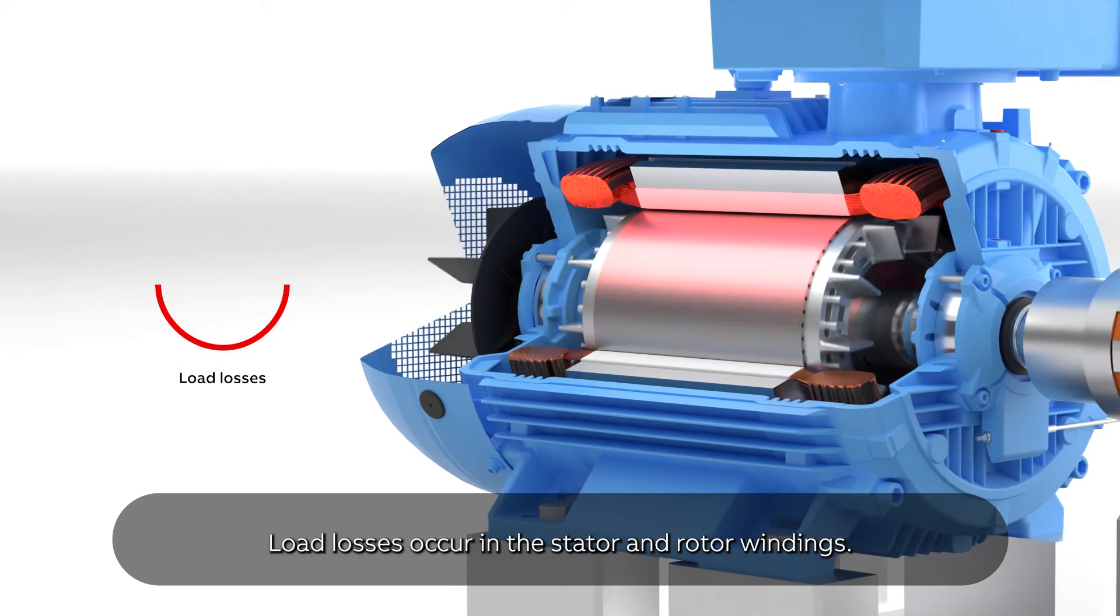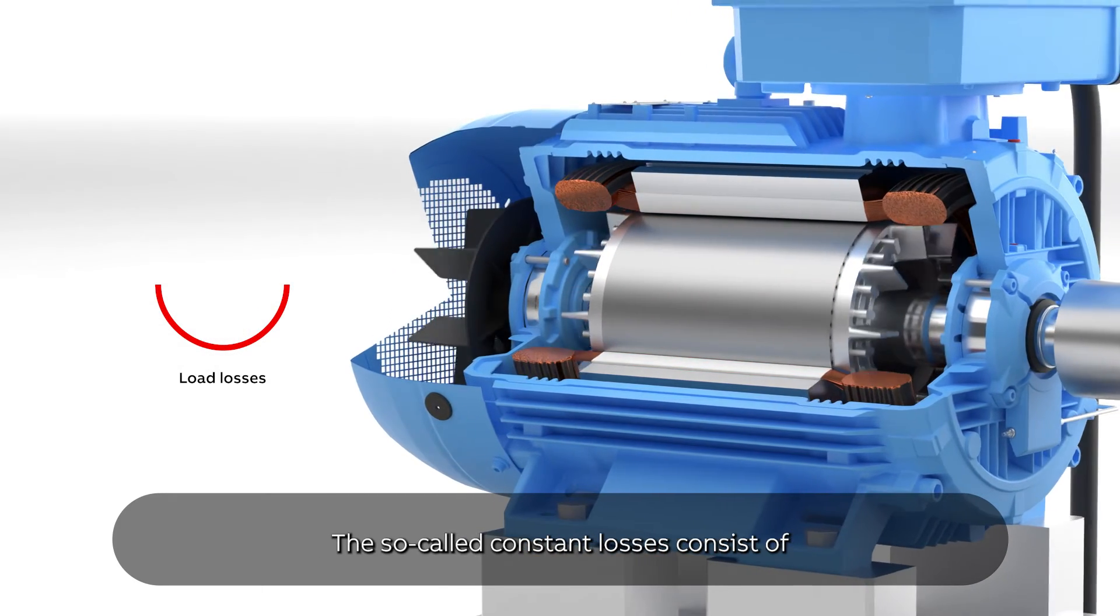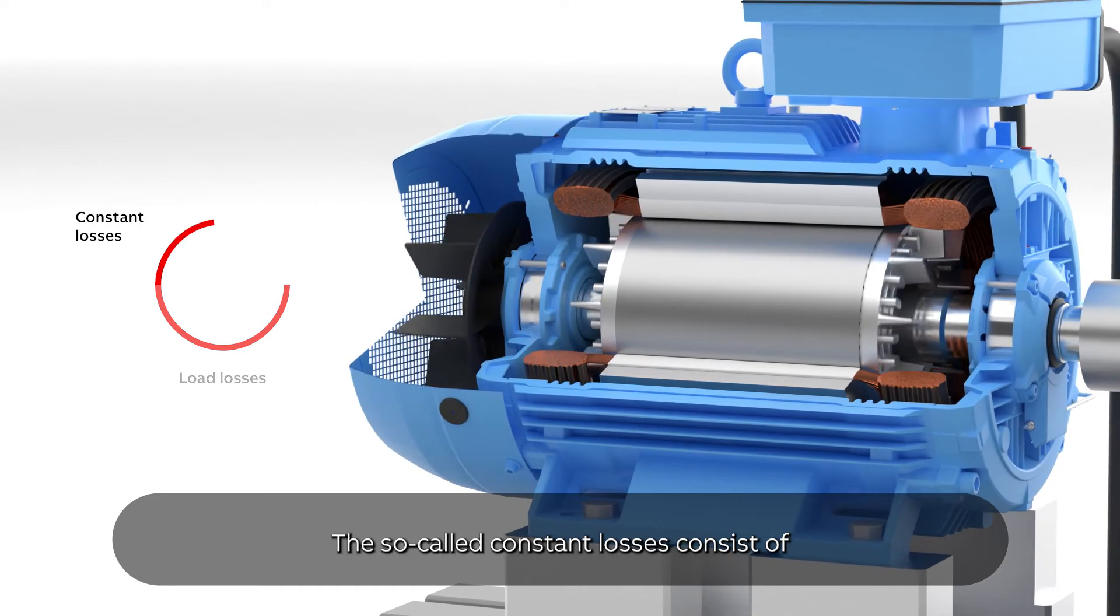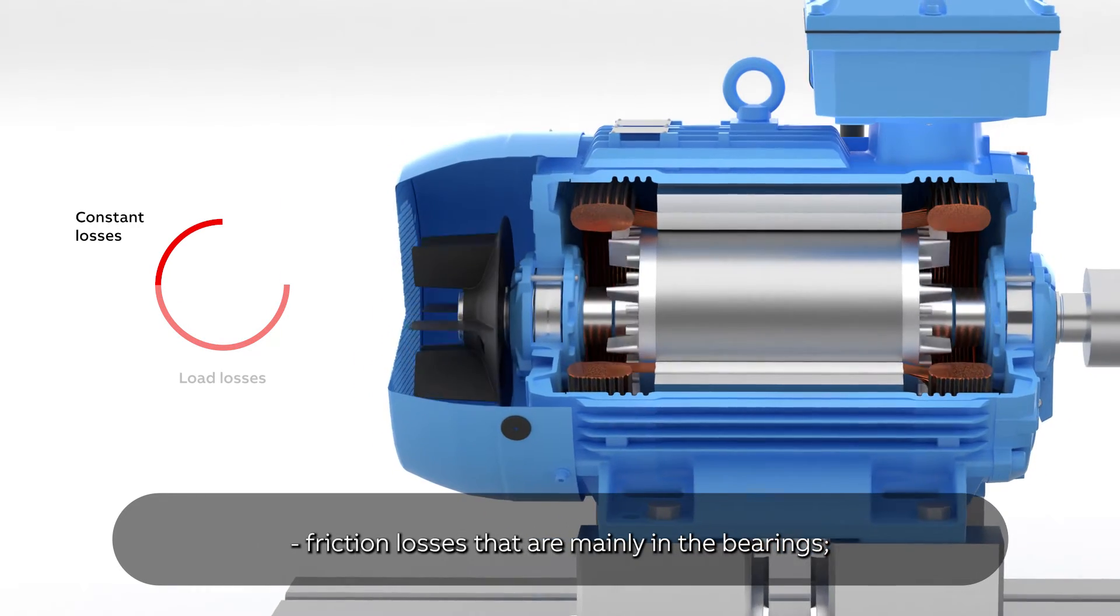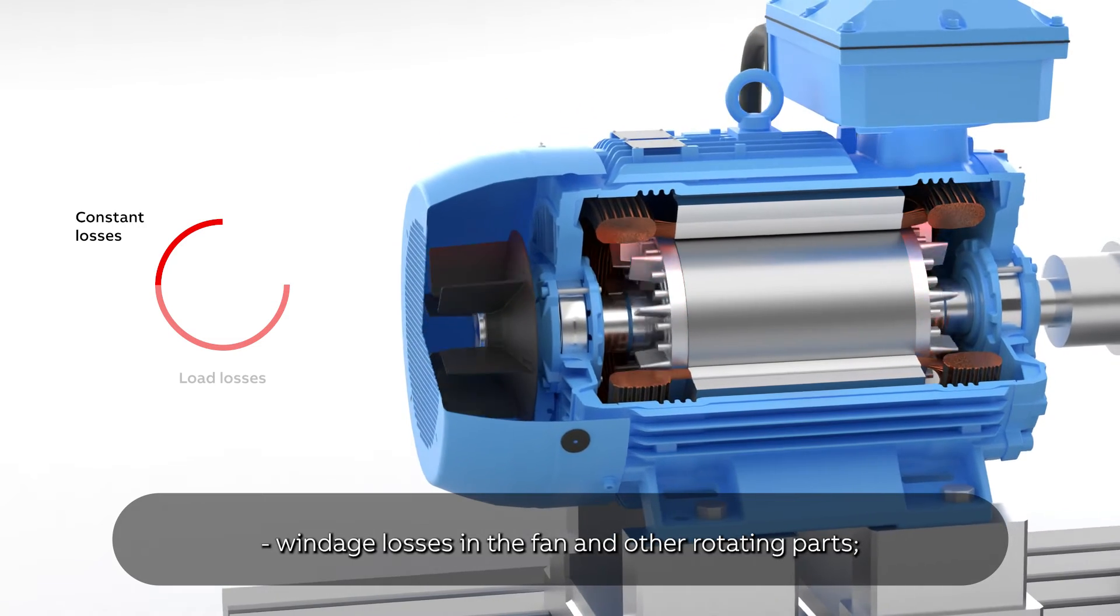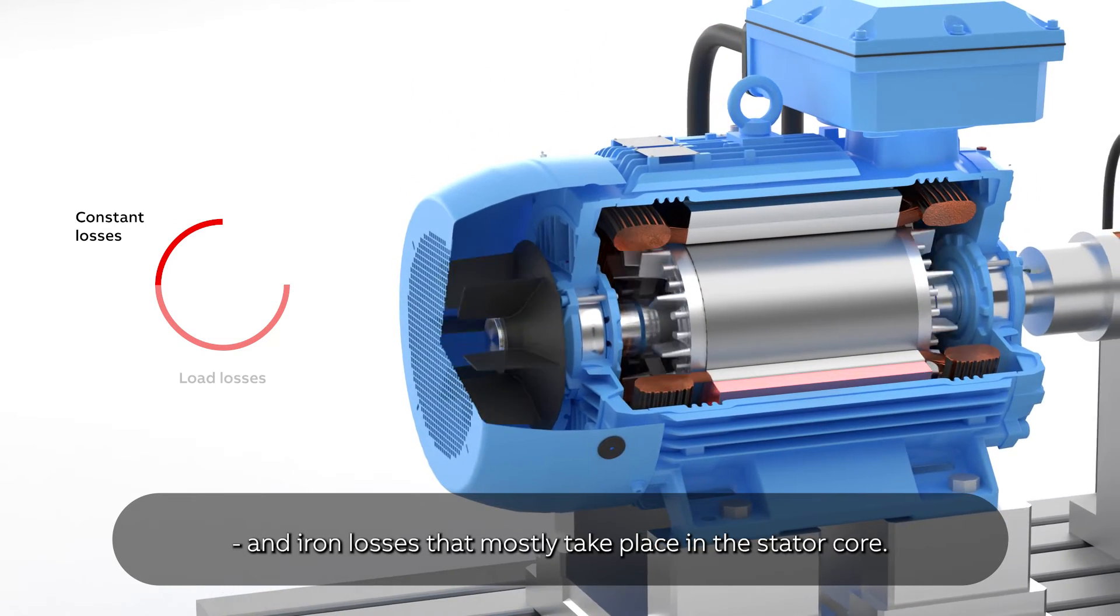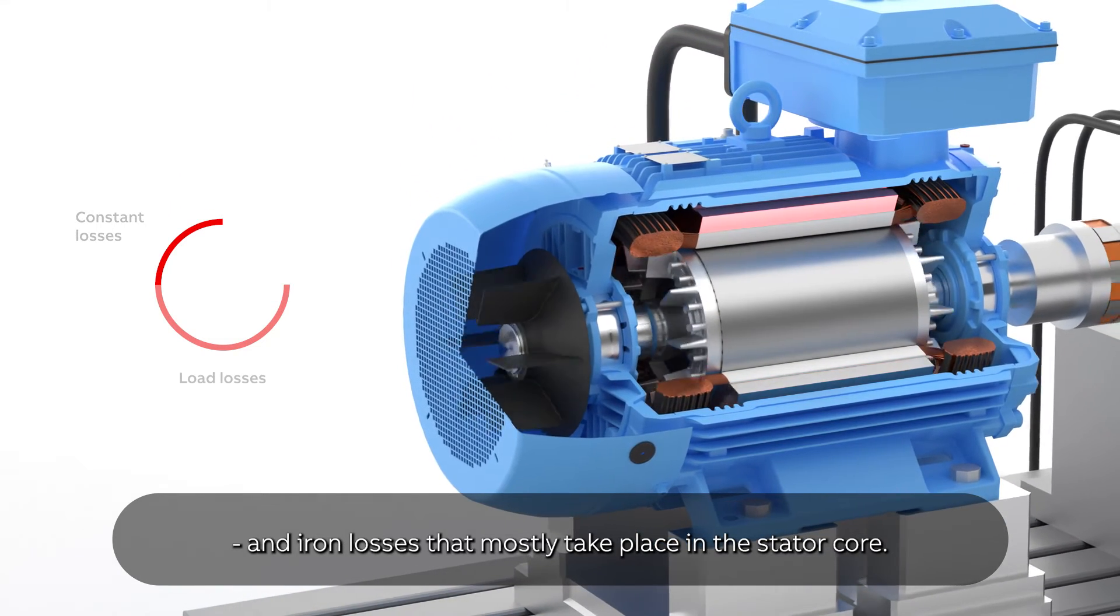Load losses occur in the stator and rotor windings. The so-called constant losses consist of friction losses that are mainly in the bearings, windage losses in the fan and other rotating parts, and iron losses that mostly take place in the stator core.